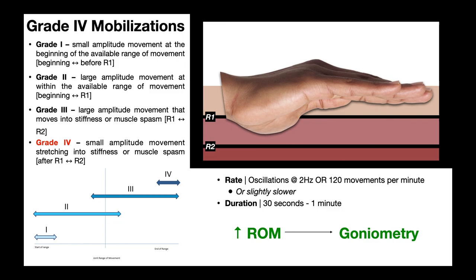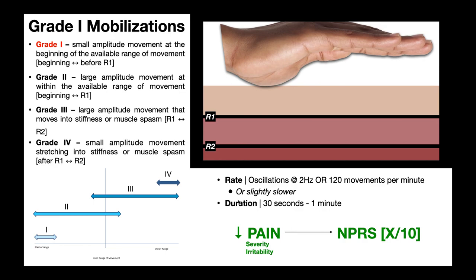When we look at grade one through four mobilizations, the rate and duration really aren't that much different. In terms of rate, we're going to treat them as oscillations — we're not just doing it once, we're oscillating at a rate of about two hertz, which is basically 120 movements per minute. This is exactly the rate you would do if you're performing CPR — they always say do it to the beat of 'Stayin' Alive' by the Bee Gees. That's the rate you're doing these mobilizations at, though you can do them a little bit slower.